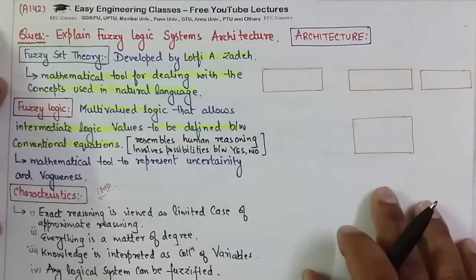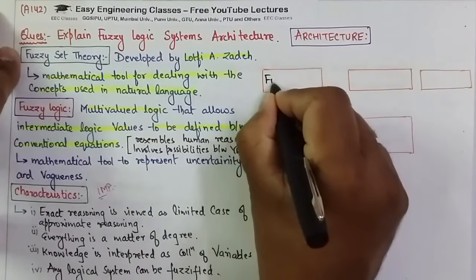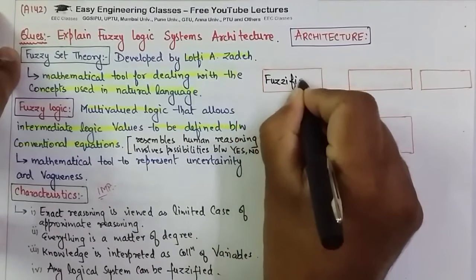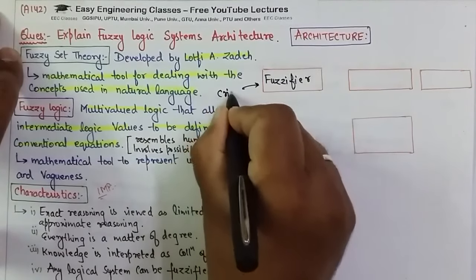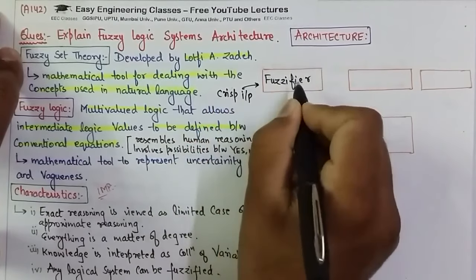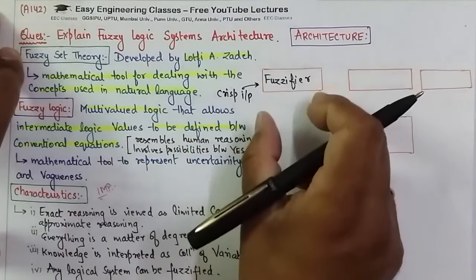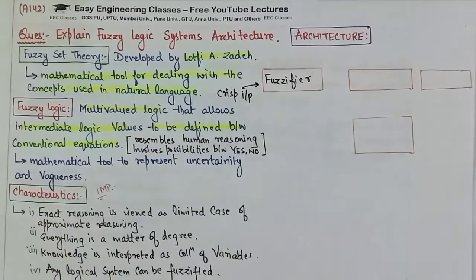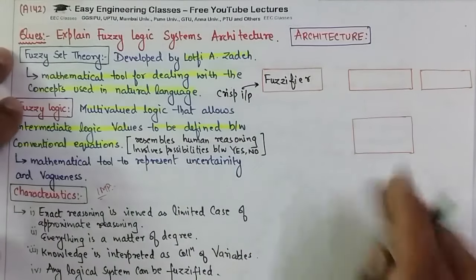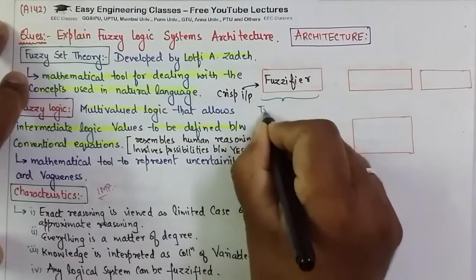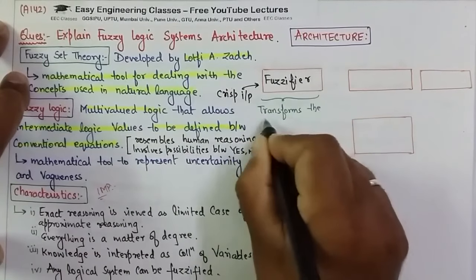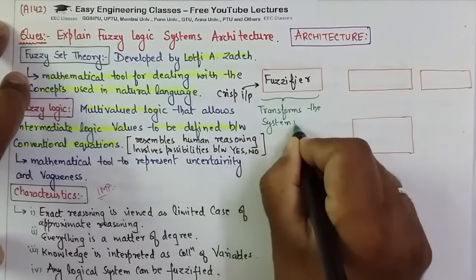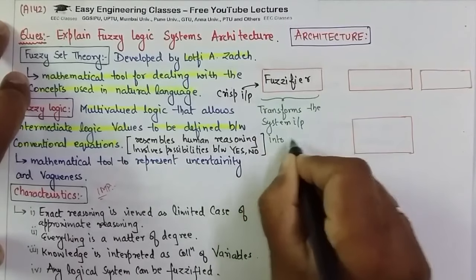One is our first one that is fuzzifier. So what happens is that the crisp input goes into fuzzifier. It transforms the system input into fuzzy sets.